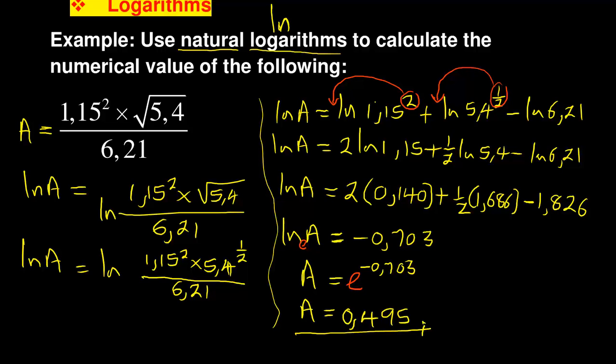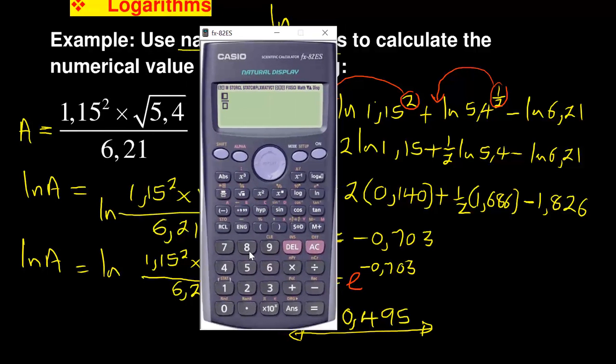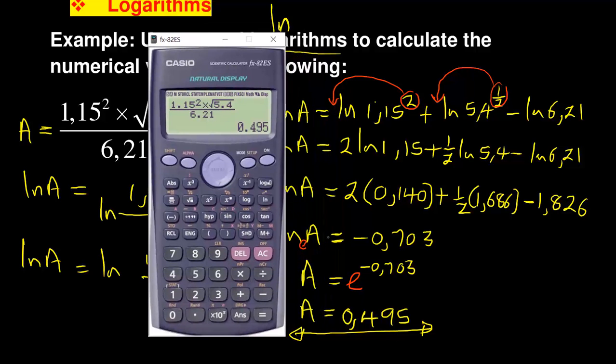That is the value of the expression when we simplify it. It's important to test if your answer is correct. Go to the original one, use a calculator: 1.15 squared times square root of 5.4 divided by 6.21. It gives you 0.4948, but if you round off to three decimal places, it gives you the exact one we got: 0.495.